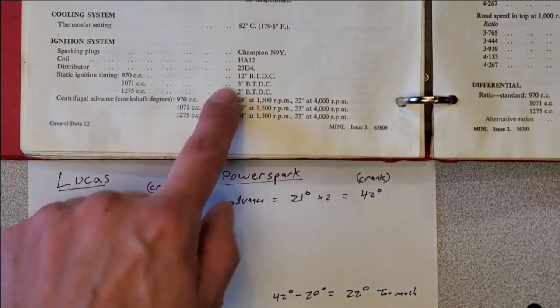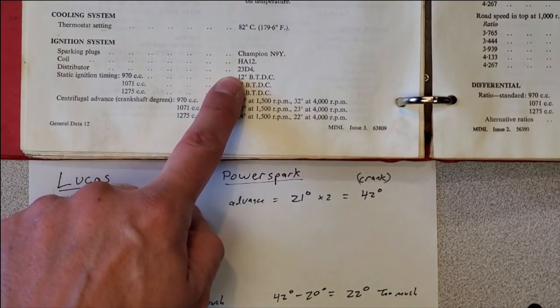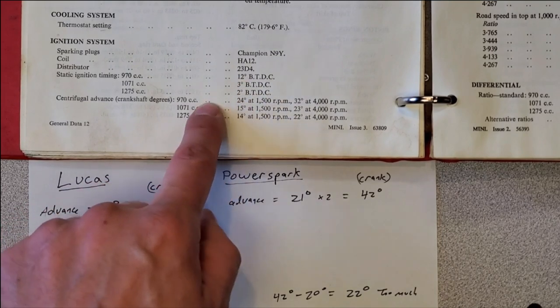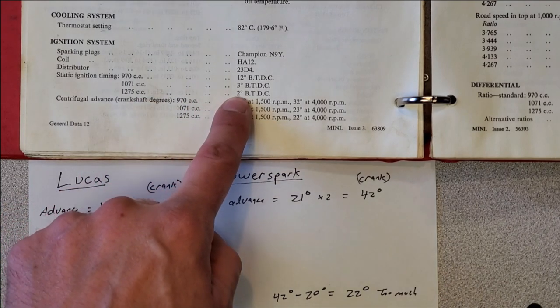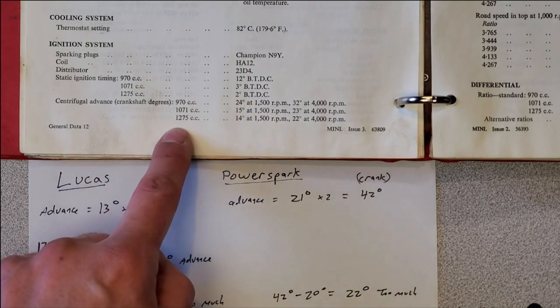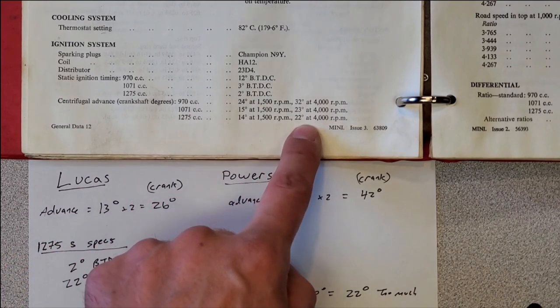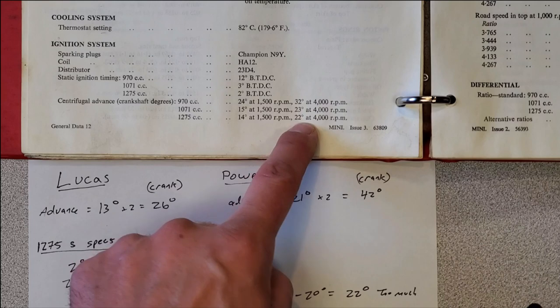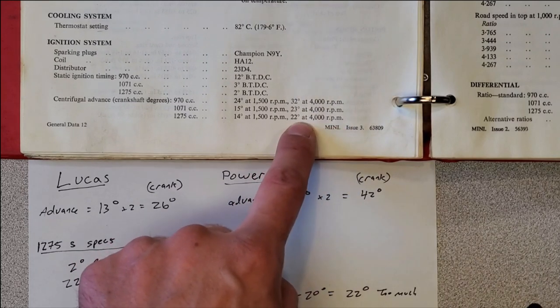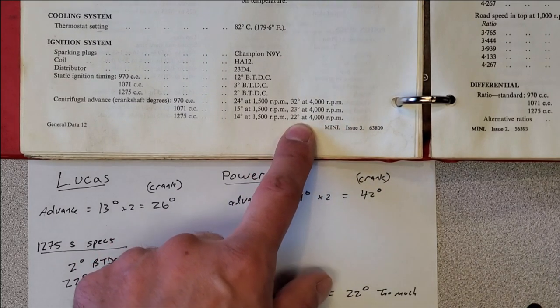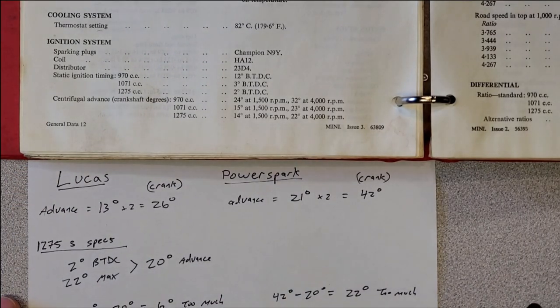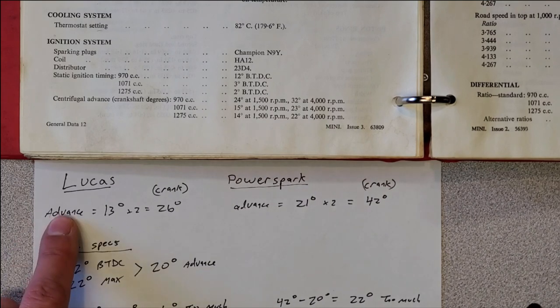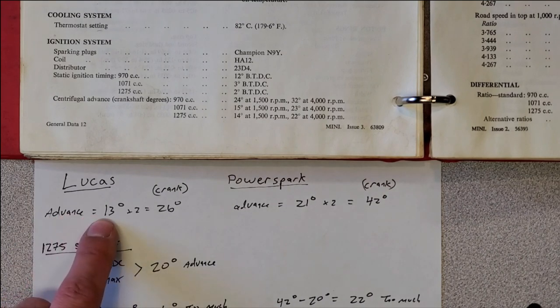So, a 23D4. We'll just use the specs for this - a 1275 motor, let's just say. Originally, two degrees of timing before top dead center, and the factory gives us the total timing numbers here at 22 degrees at 4,000 RPMs. So let's go through our example and pretend that we're building this distributor and we're using these two as our starting point.